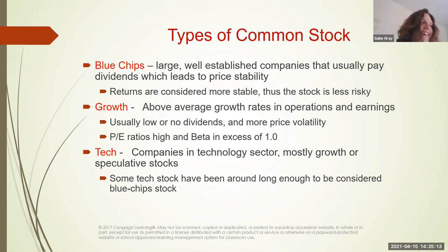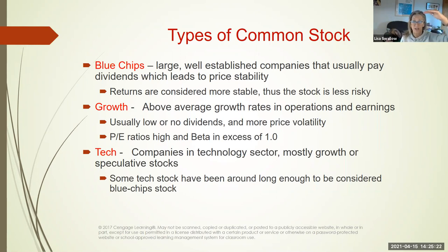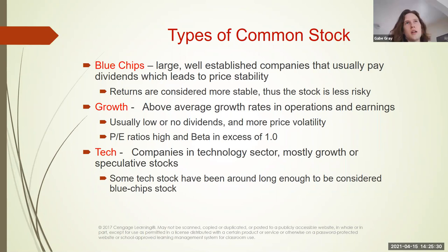A high price-to-earnings ratio means the stock is expensive — overvalued. You're buying at the top if it has a high PE ratio. What's an average PE ratio over time? It really depends on which market you're in.